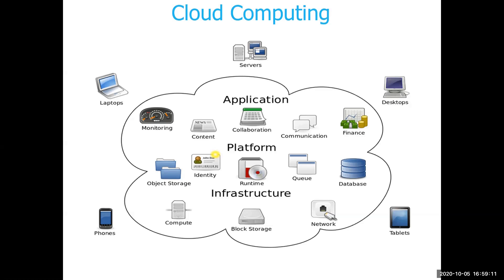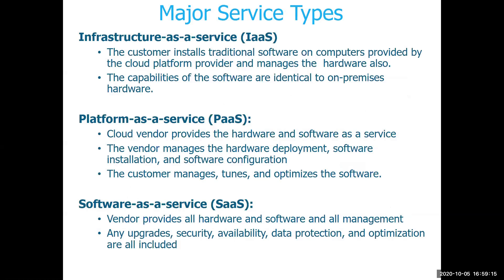Three types of cloud computing are available: application, platform, and infrastructure. That depends on how much the cloud service provider is involved versus your own involvement. Infrastructure as a Service means the cloud provider provides you hardware — a machine with a particular amount of memory and CPU processing. This machine can be accessed from your own premises through the internet, and you will be able to load your own software and work on it. That is what Infrastructure as a Service is about.